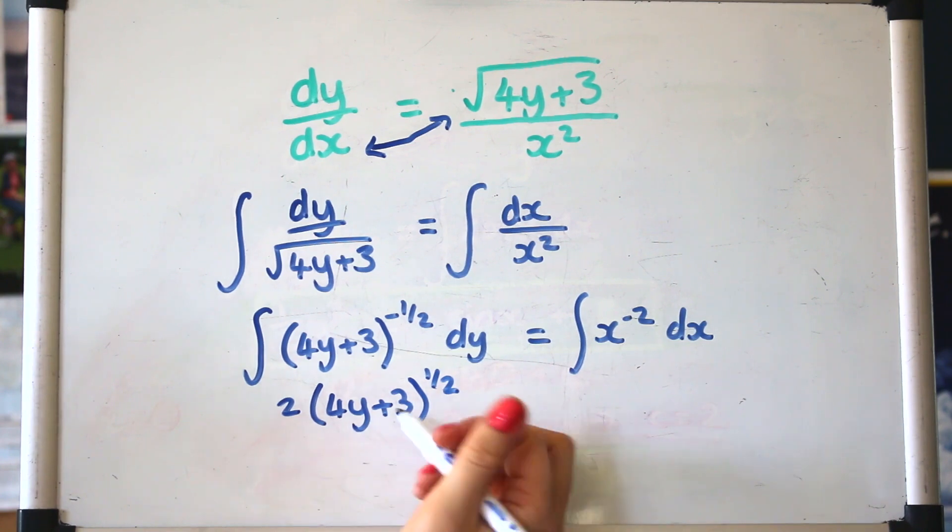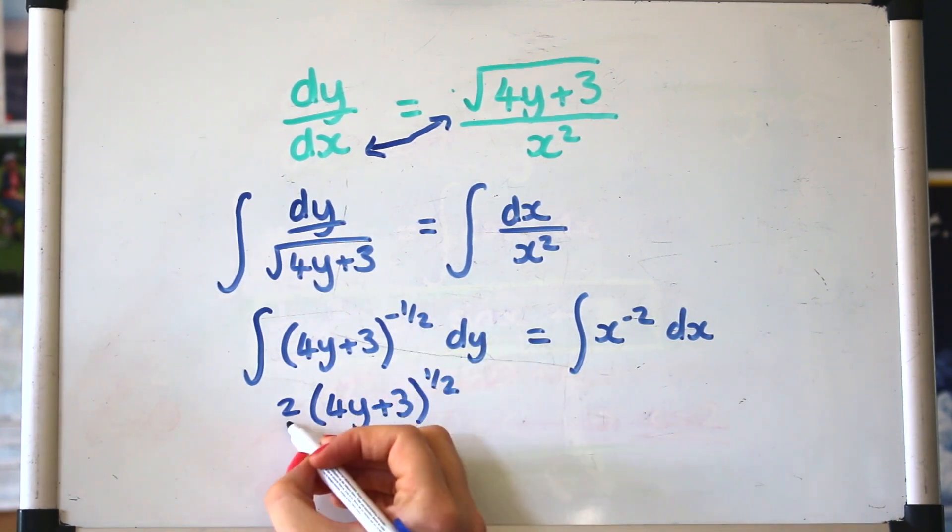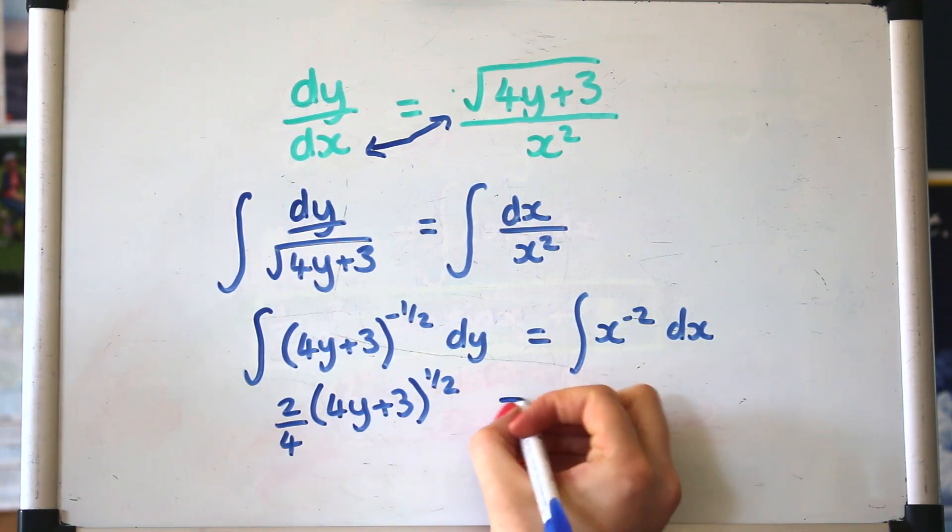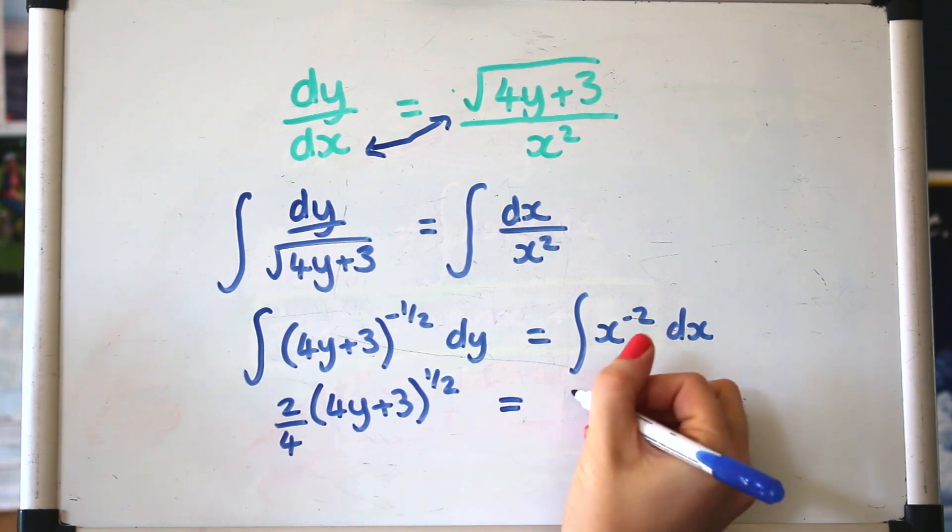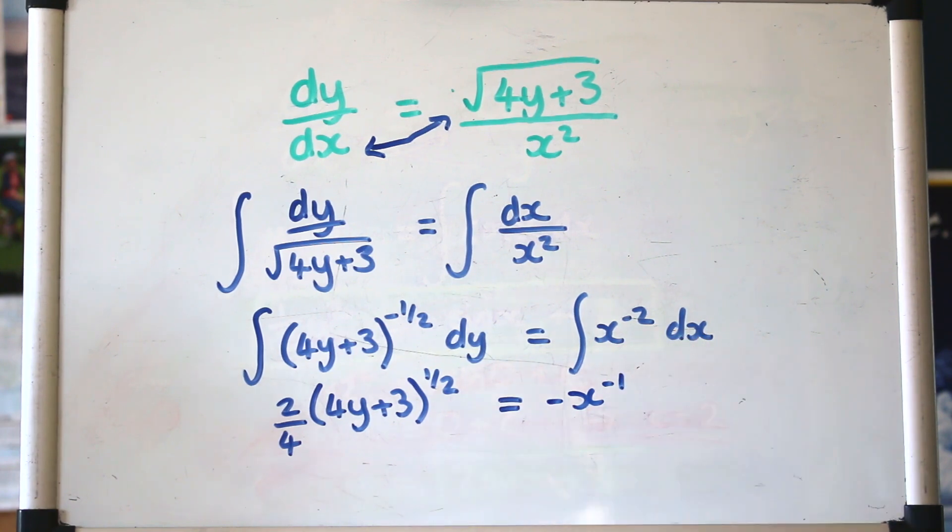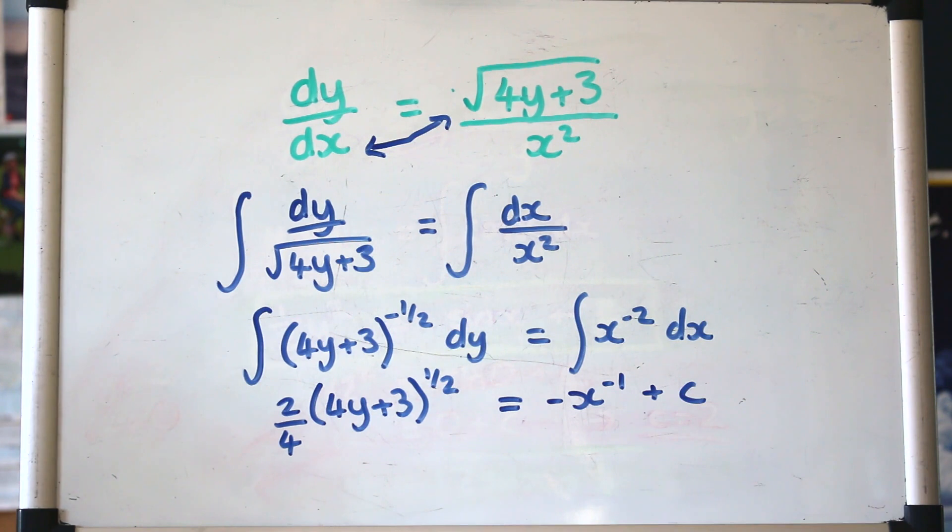So on this side we've got a bit of reverse chain rule, so adding one to the power, dividing by it, and then we also need to divide by the derivative of the inside bracket. Make sure you've practiced reverse chain rule for that. I've got another video if you need to look at it. And on this side it should be a more straightforward one. And we've got our plus c. That's our general solution.